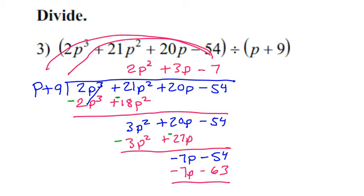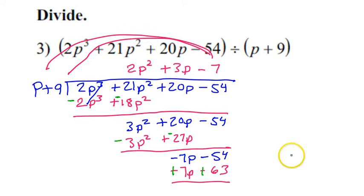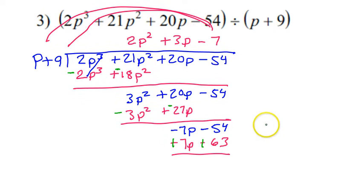And then once again, I change the signs. So what do you get for your remainder? So you get 9 for your remainder. And what do you do with that remainder? You put it over the P plus 9. So it's 9 over P plus 9. So this would be your final answer for number 3.